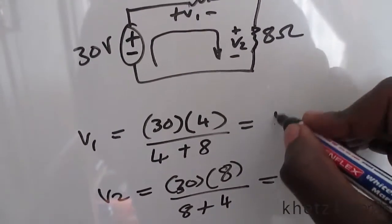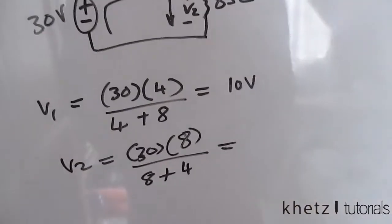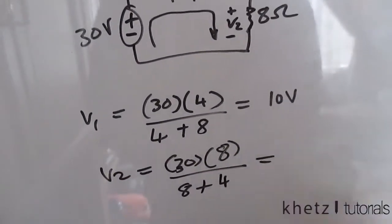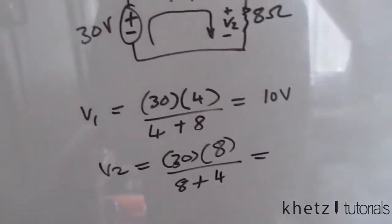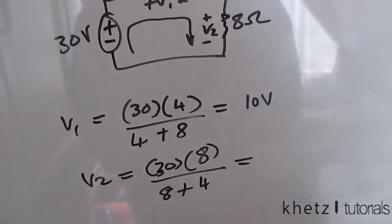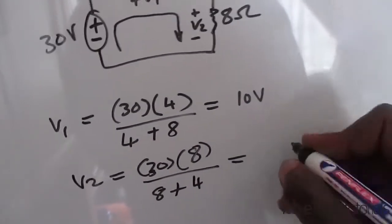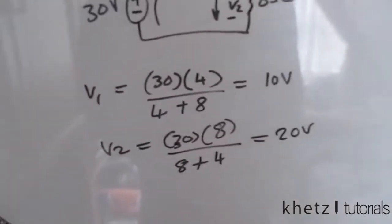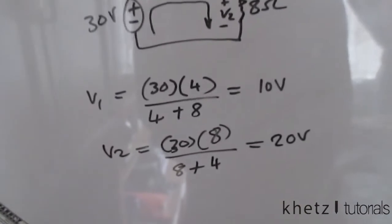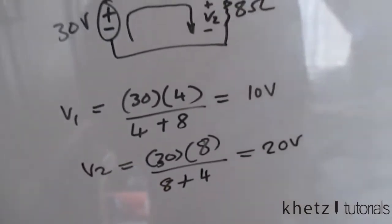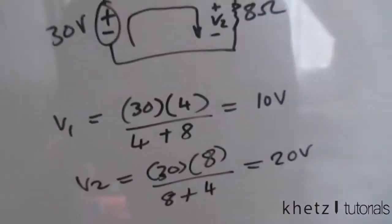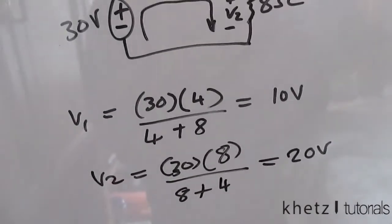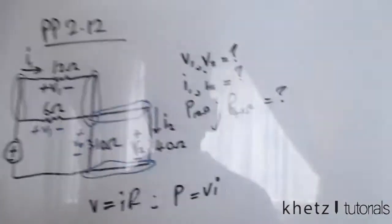For v2, we do the same: 30 times 8 divided by 8 plus 4, which gives 240 divided by 12, equal to 20 volts. So v1 is 10 volts and v2 is 20 volts — the first part of the question is answered.